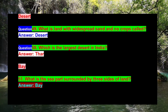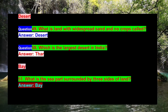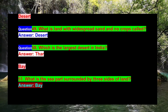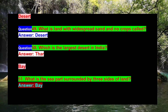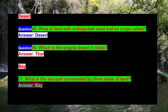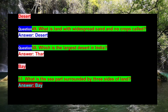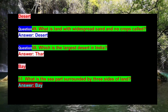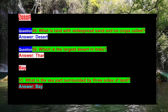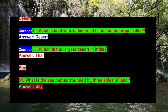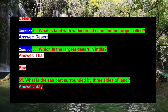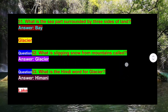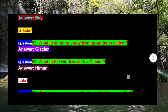Question 49: What is land with widespread sand and no crops called? Answer: Desert. Question 50: Which is the largest desert in India? Answer: Thar. Question 51: What is the sea path surrounded by three sides of land? Answer: Bay.